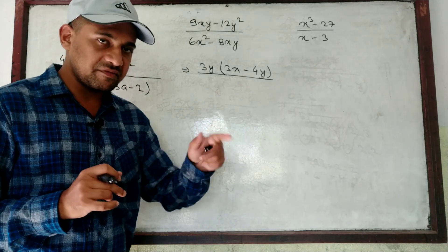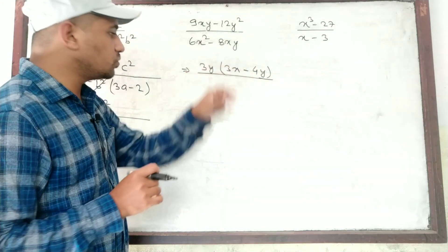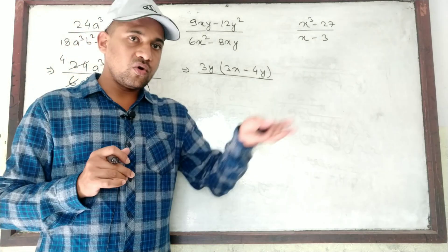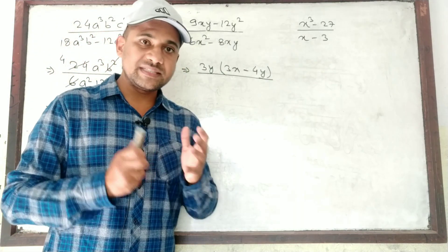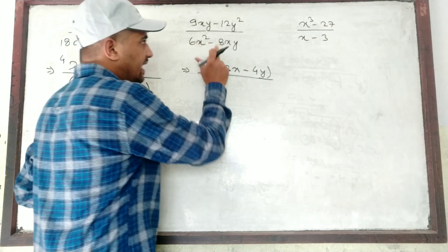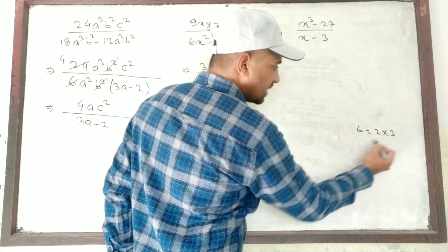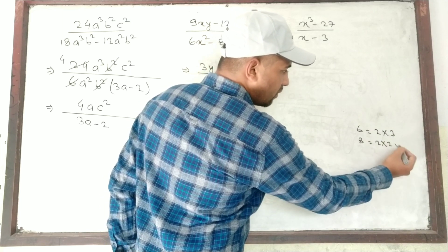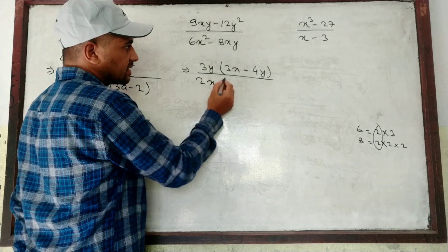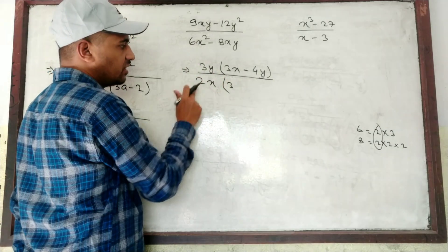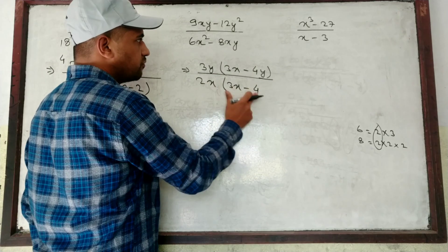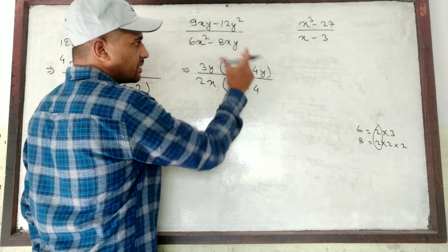For the denominator: 6 and 8. If you don't know how to find common, find the factors: 6 = 2 times 3, and 8 = 2 times 4. So common is 2. From X² and X, common is X. So 2 times 3 gives 6, and from X² with X common, remaining is X. Minus: 2 times 4 gives 8, X is already common, remaining is Y. So denominator is 2X(3X minus 4Y).